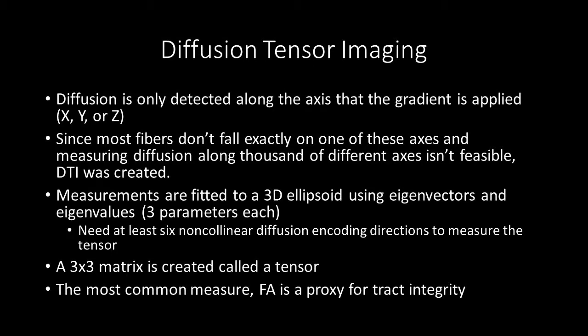Now that we have a general understanding of how DWI data is gathered, let's take a look at how we model it with diffusion tensor imaging. Diffusion is only detectable along the axis the gradient is applied to. Back in the early 2000s, due to technical limitations, it was only along the X, Y, and Z axes. Since most fibers don't fall exactly on one of these axes and measuring diffusion along thousands of different axes wasn't feasible, DTI was created. The DWI measures are fitted to a 3D ellipsoid using eigenvectors and eigenvalues, creating a 3x3 matrix called a tensor over each and every single voxel.